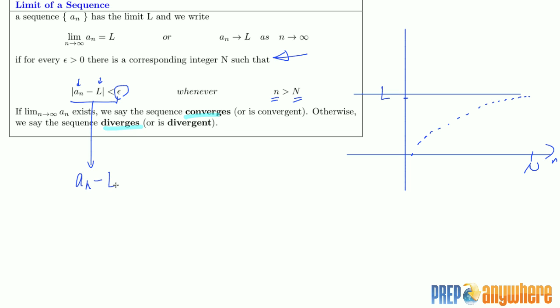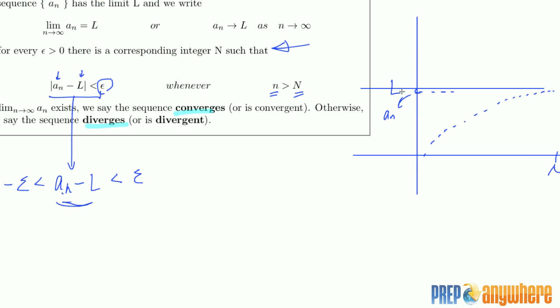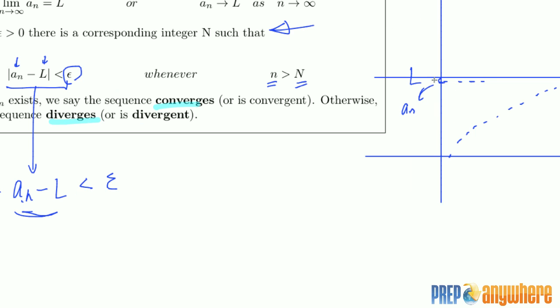absolute value means it's between epsilon and minus epsilon. So this is a distance between a_n and L. This is n, the y value is a_n, so this distance, this tiny distance, is epsilon.